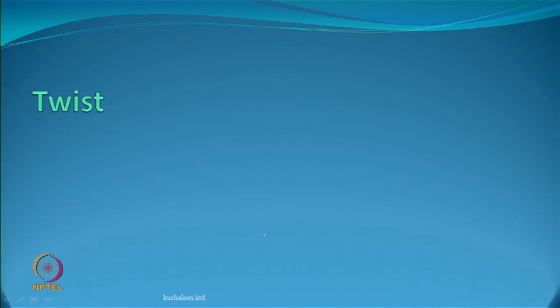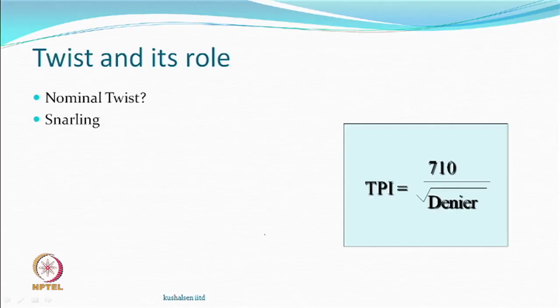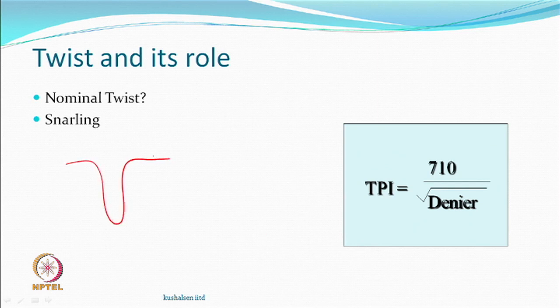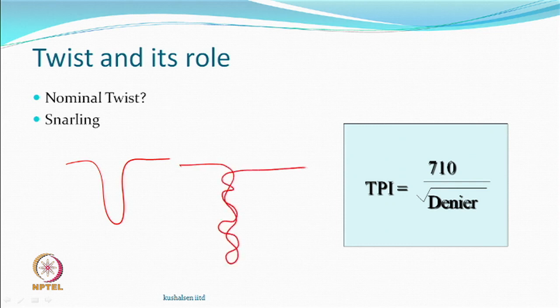The next parameter is twist. Assuming temperature and time are already fixed, we now see the effect of twist. When you look at any textile yarn, there is some nominal twist inserted to hold the fibres together. What is meant by normal or nominal twist: if you take the yarn and bring the two ends together, it will make a loop — that is normal twist. If you have more than the normal twist, you would expect snarling. In texturing, our twist levels are very high, much higher than this level.